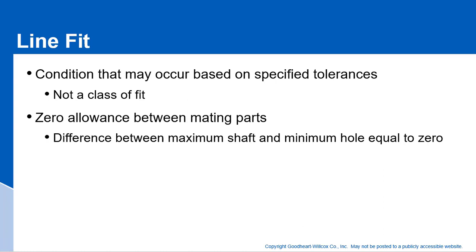Here's another one — it's called a line fit. It's not really a class of fit; it's just that there's zero allowance between the mating parts. That means if the hole is at its smallest and the shaft is at its biggest, those parts have the same dimension. That's called a line fit or a line-to-line fit. It would be very difficult to assemble a line-to-line fit, especially close to those maximum material conditions, because there is no minimum clearance.